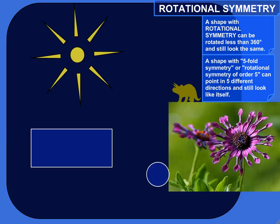All right, so an object with rotational symmetry can be rotated less than a full circle and still exactly line up with itself.